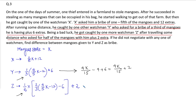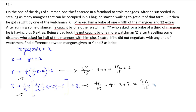Now how many mangoes are received by watchman Z? Taking half of [two-thirds of (4/5 k minus 12) minus 6] plus 2: the twos cancel out, giving 4k divided by 15, then minus 4, minus 3, plus 2. That equals 4k divided by 15 minus 7 plus 2, which is 4k divided by 15 minus 5.